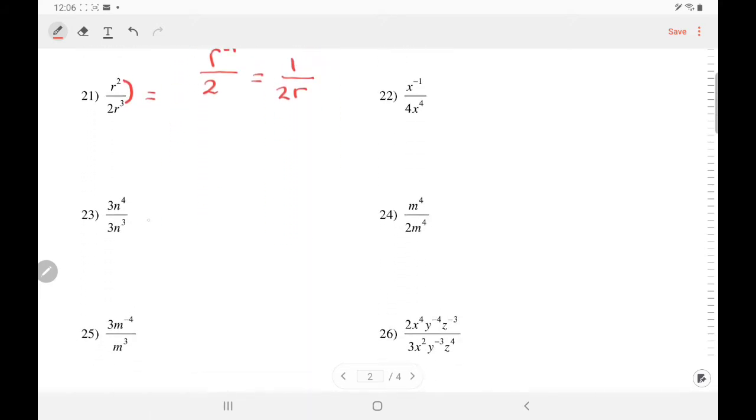In number 23, the 3's cancel out. And the N's, they're like bases, so we subtract. So N to the power of 4 minus 3 is 1, which we really don't need to write.